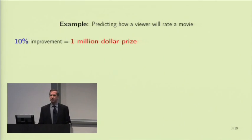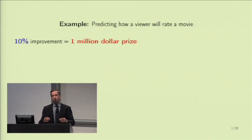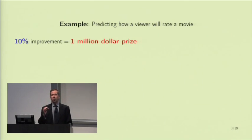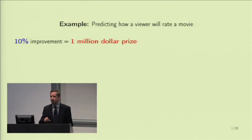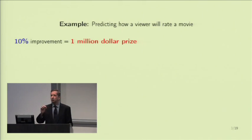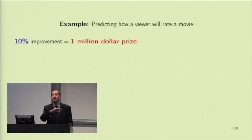Why should a 10% improvement be worth $1 million? It's because if the recommendations a movie company makes are spot-on, you will pay more attention to them, you're likely to rent the movie they recommend, and they'll make a lot of money — much more than the $1 million they promised. This is very typical in machine learning. For example, machine learning has application in financial forecasting, where the minutest improvement can make a lot of money. Pushing a system to be better using machine learning is a very attractive aspect of the technique across a wide spectrum of applications.